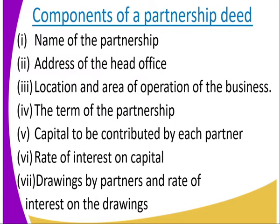Number four, the terms of partnership — they should clearly illustrate what the terms are under which they are supposed to work. Number five, the capital to be contributed by each partner — they must state the capital, whether it is in ratio or the same amount each partner is contributing.